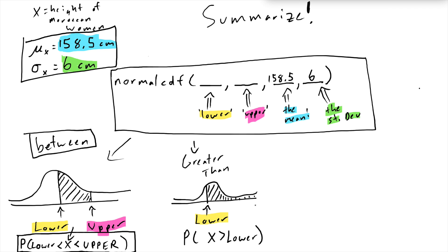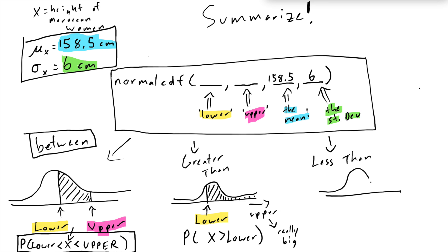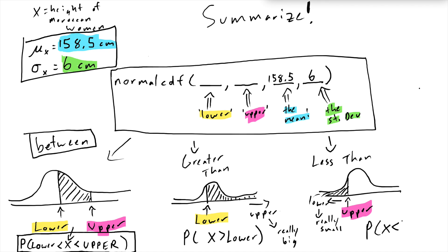The third kind is the 'less than' problem, where you have a number and want the area to its left. In that case, that number becomes the upper value, and the lower value needs to be really small — something like negative 1000. In symbols, this is P(X < upper).